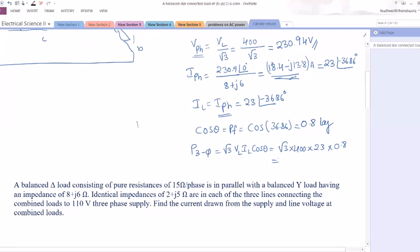Just take the magnitude. Keep it in polar form. So into 0.8. So how much you will get root 3 into 400. Root 3 multiplied by 400, multiplied by 23, multiplied with 0.8. So I will get around 12,747.9 watts or 12.74 kilowatts. Similarly, if you have not asked actually, but we can even find out Q three-phase simply root 3 VL IL sin theta.